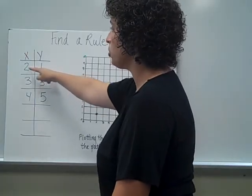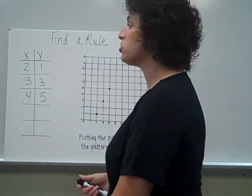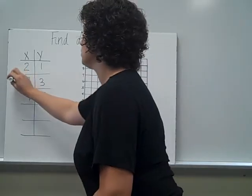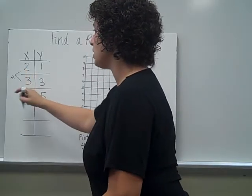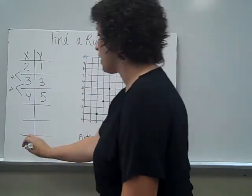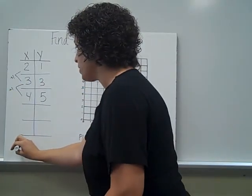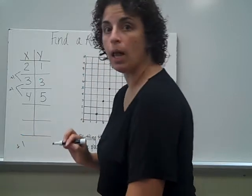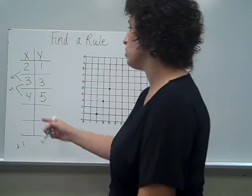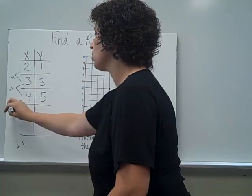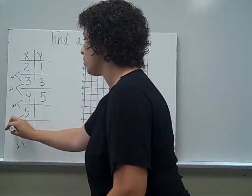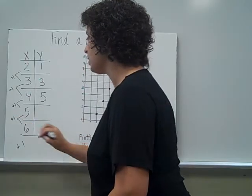I'm starting with 2 and looking down to 3. How does 2 become 3? Plus 1. How does 3 become 4? Again, plus 1. So the pattern for my x coordinates is add, or plus 1. So to continue this pattern, 4 plus 1 would make 5, and 5 plus 1 would make 6.